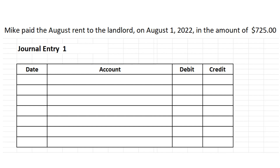In this first example, Mike paid the August rent to the landlord on August 1st, 2022, in the amount of $725. How do we list that as a journal entry? We want to list the date first.